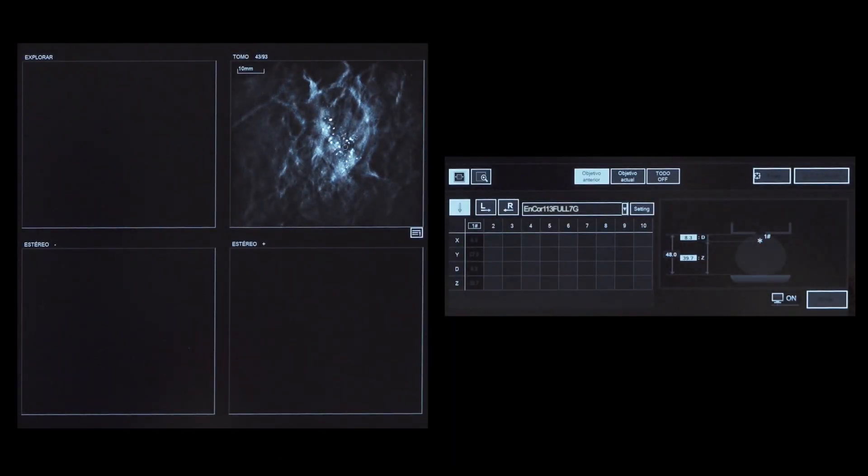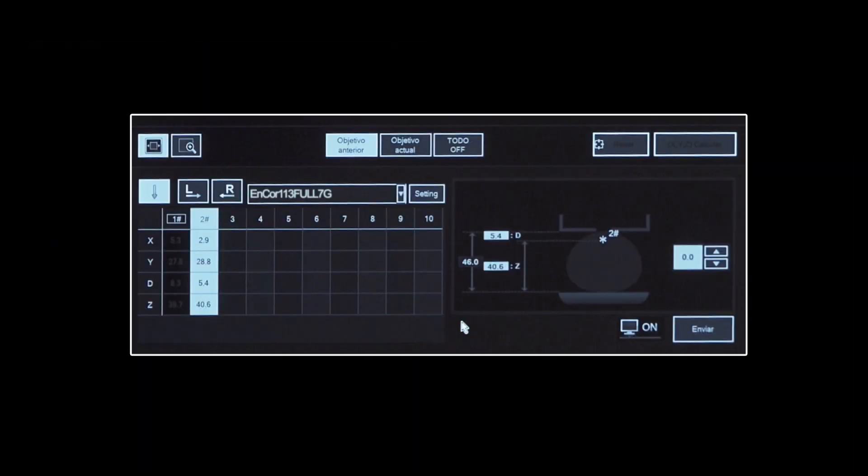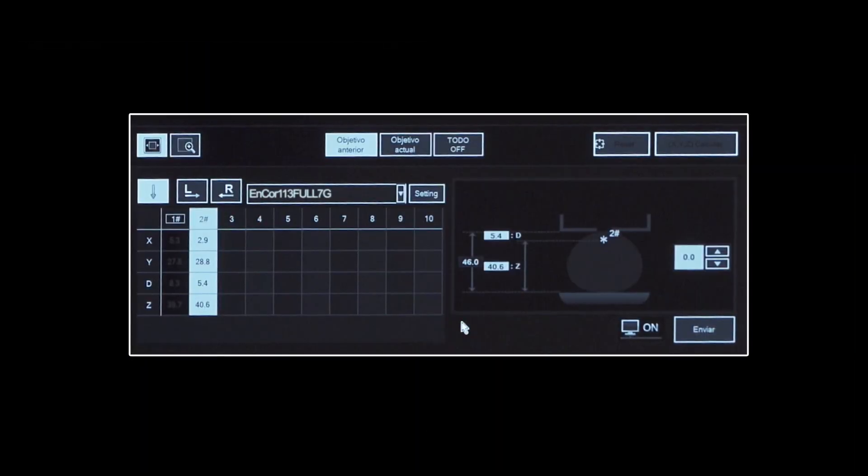Scroll through the TOMO images. Since the lesion has shifted in relation to the initial target, a new target is added. Select the target. Confirm vertical approach. Observe the new breast pictogram indications.